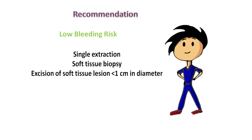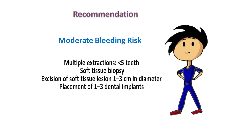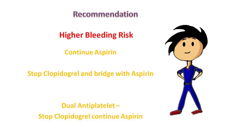In low bleeding risk procedures — such as single extraction, soft tissue biopsy, or excision of a soft tissue lesion 1–3 cm in diameter — single or dual antiplatelets can be continued. In moderate bleeding risk procedures such as multiple extractions but less than 5 teeth, soft tissue biopsy, excision of soft tissue lesion 1–3 cm, or placement of 1–3 dental implants: no change in single antiplatelet, but in dual antiplatelet therapy we can withhold clopidogrel and continue aspirin. In high bleeding risk procedures: no change in aspirin, stop clopidogrel and bridge to aspirin. If on dual antiplatelet, stop clopidogrel and continue aspirin.